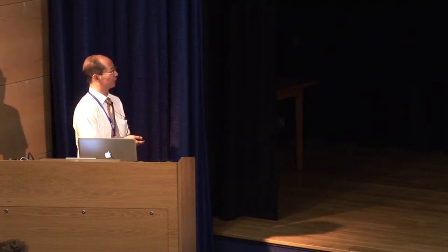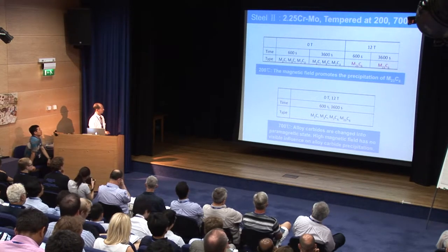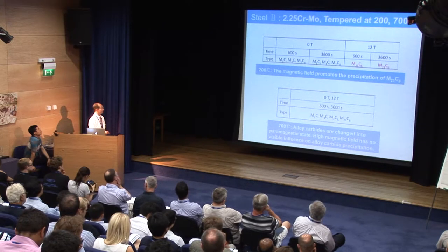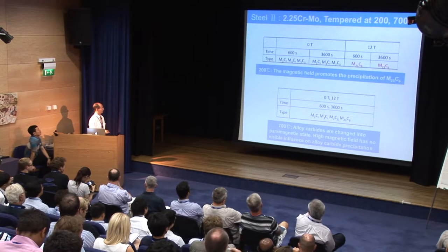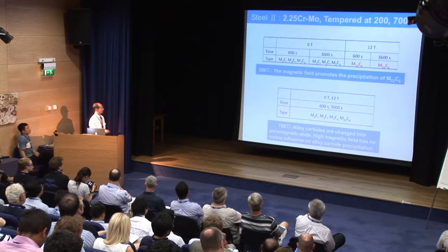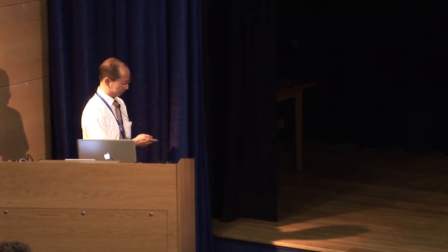However, when we transfer to a higher temperature tempering, the same types of austenoid carbides are precipitated in both specimens, both with and without the presence of high magnetic field. So we can see that austenoid carbides are not influenced by the high magnetic field at higher temperature tempering.